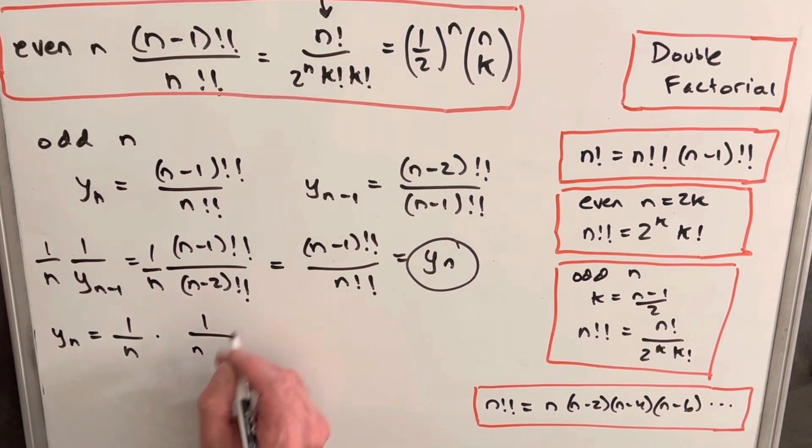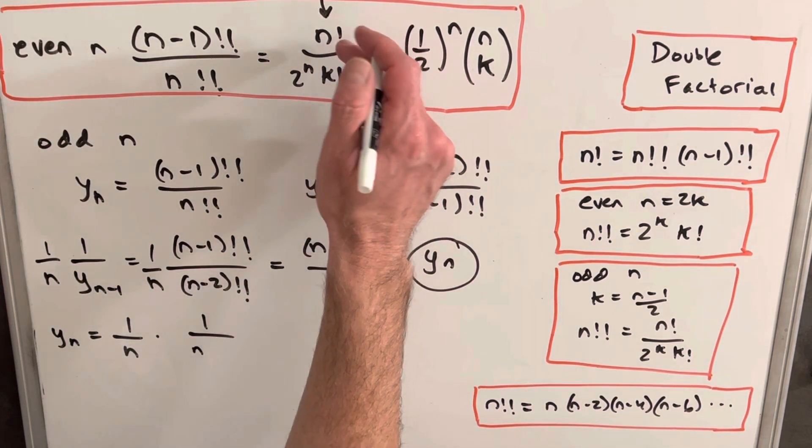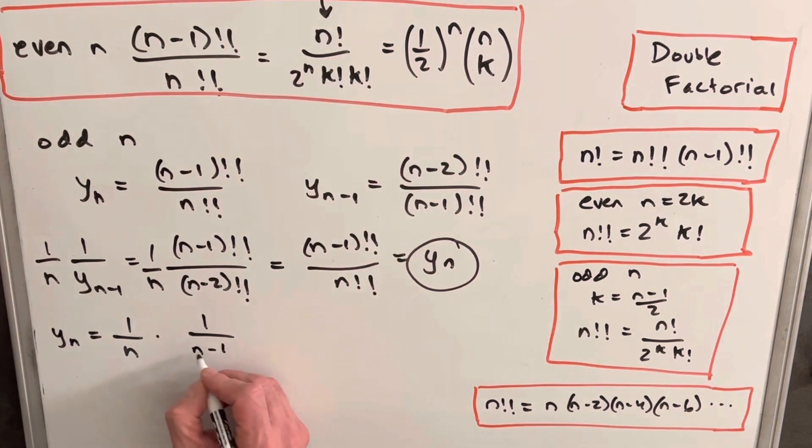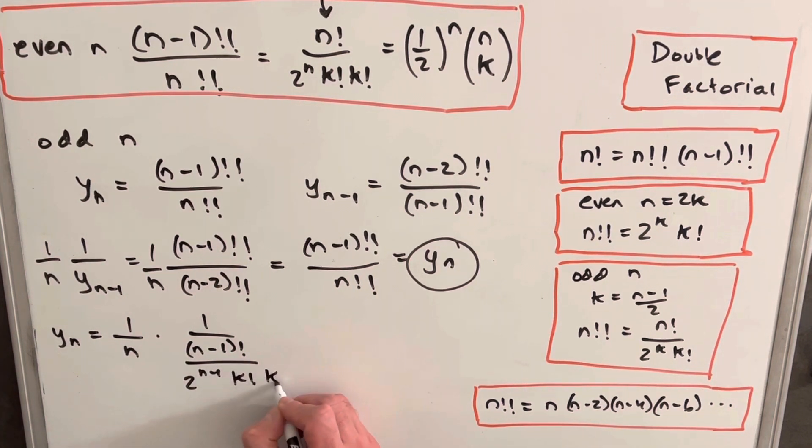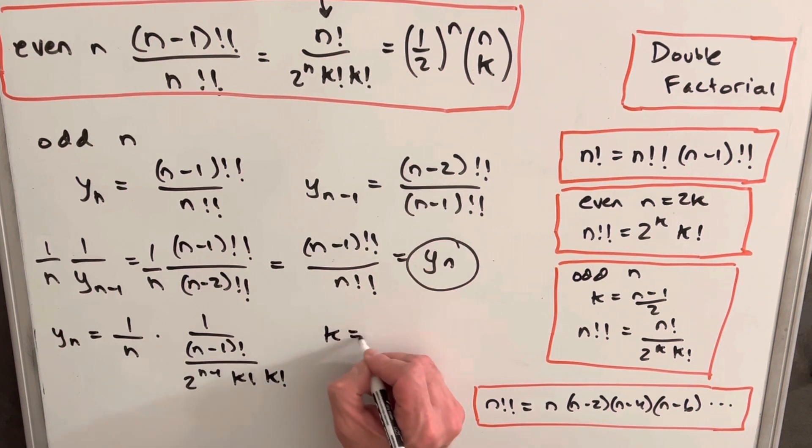So plugging in, and using this formula, so we're going to have, instead of n, we'll be plugging in n minus 1 in each place, so we're going to have n minus 1 factorial here over 2 to the n minus 1 times k factorial times k factorial, where k equals n minus 1 over 2.